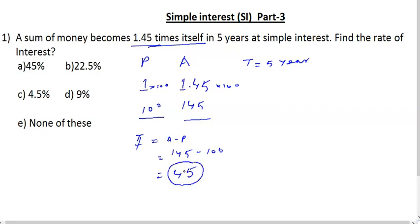The interest is 45 over 5 years, so per year the interest is 45 divided by 5, which equals 9. Therefore, the rate of simple interest equals 9 percent. So the answer is 9 percent.